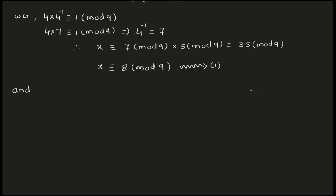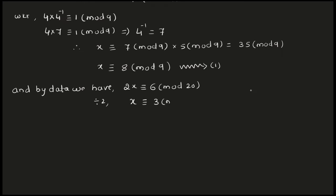By data, the second equation is 2x congruent to 6 mod 20. Again, we need to convert this to standard form. But here you can see that if you divide by 2, you directly get x. Dividing the whole equation by 2, x is congruent to 3 mod 10. Call this equation 2.